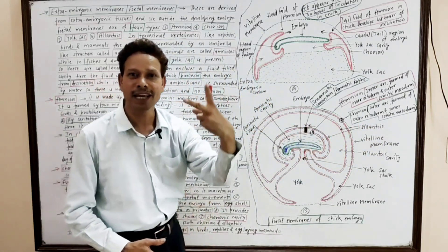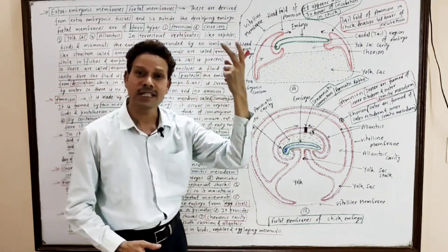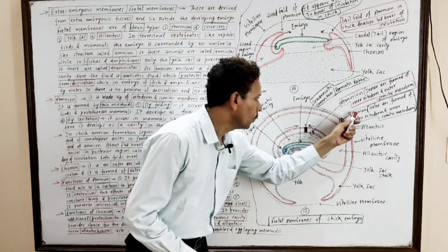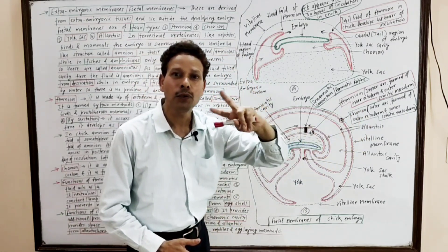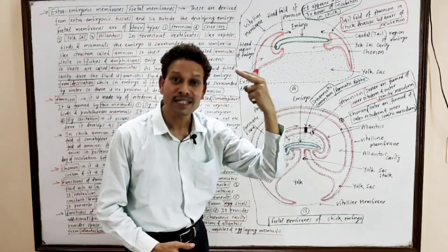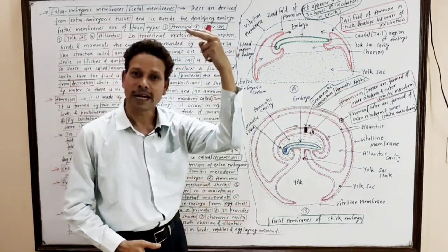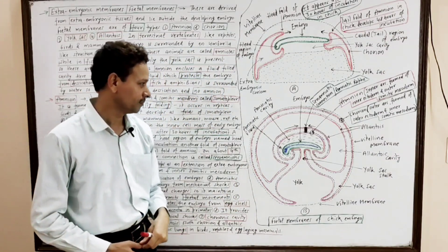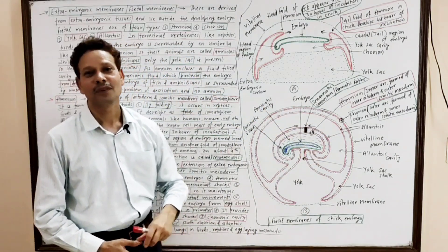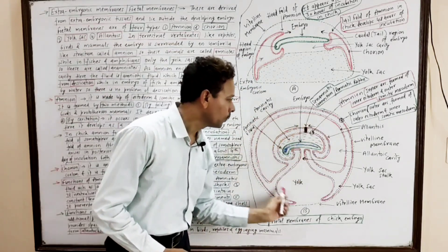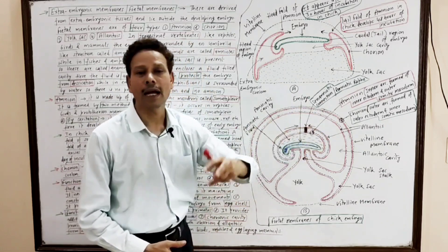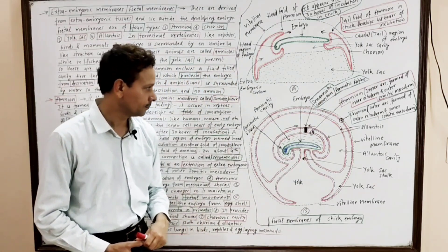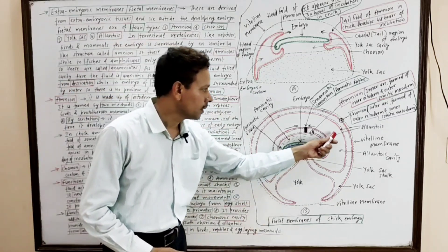The chorion provides space for the development of the next extra-embryonic coat, the allantois. In terrestrial forms — birds, reptiles, and egg-laying mammals (prototheria) — both the chorion and the allantois together produce the allanto-chorion, which acts as an extra-embryonic lung involved in gaseous exchange in the developing embryo inside the egg. The chorion also acts as a protective coat, like the amnion, absorbing mechanical shocks and preventing the embryo from mechanical injuries. In the next lecture, I will discuss the allantois and the yolk sac.